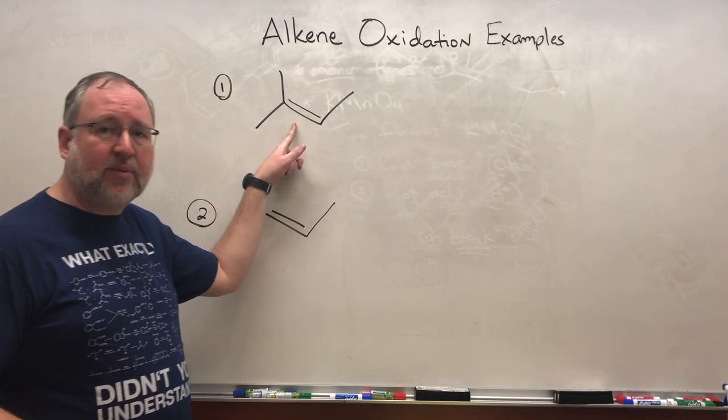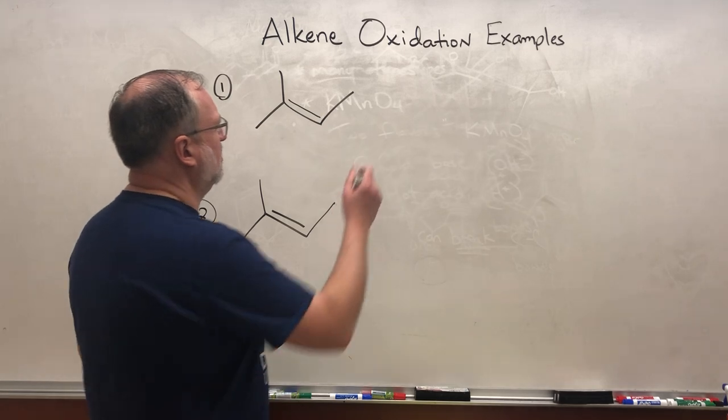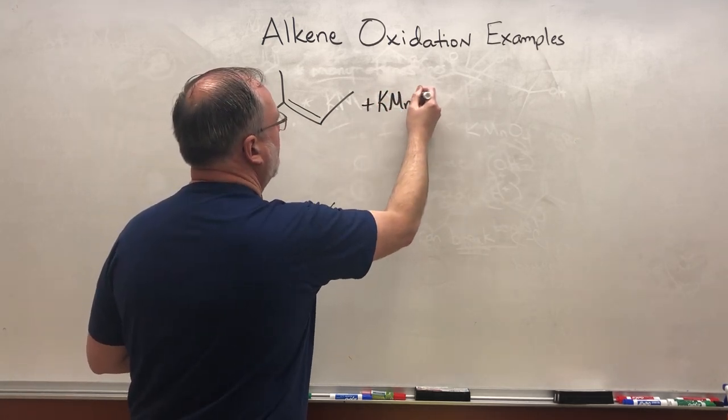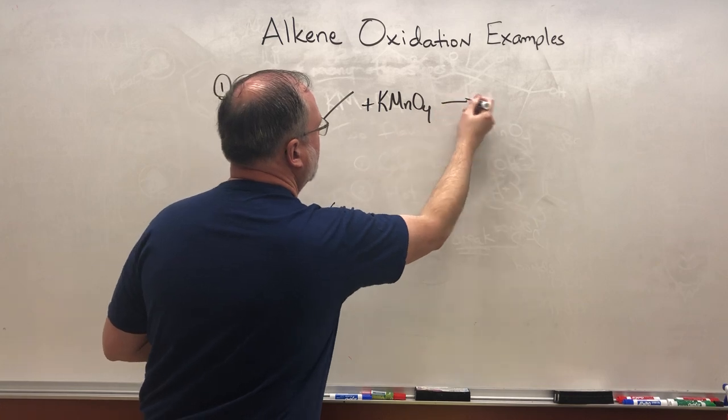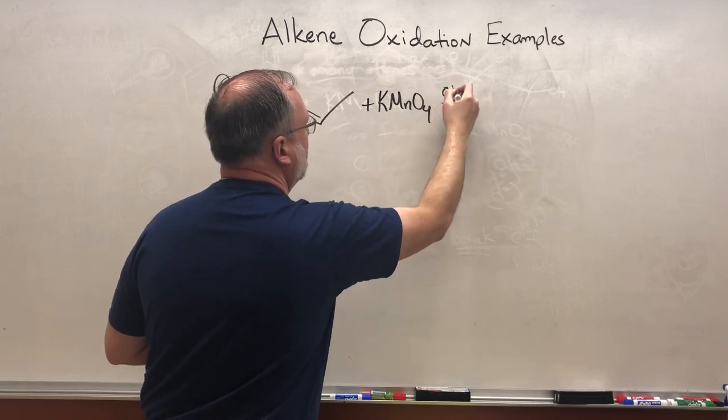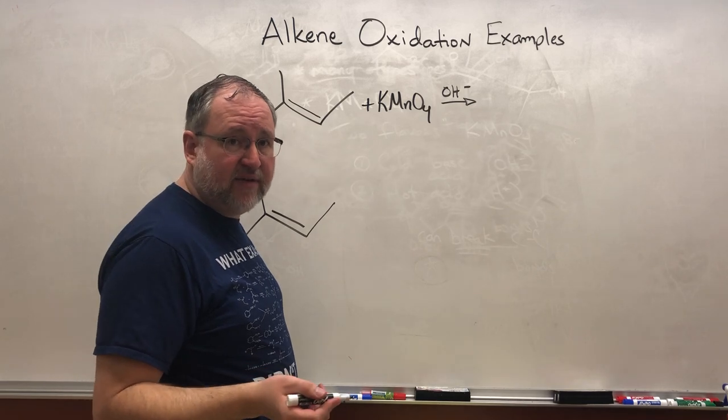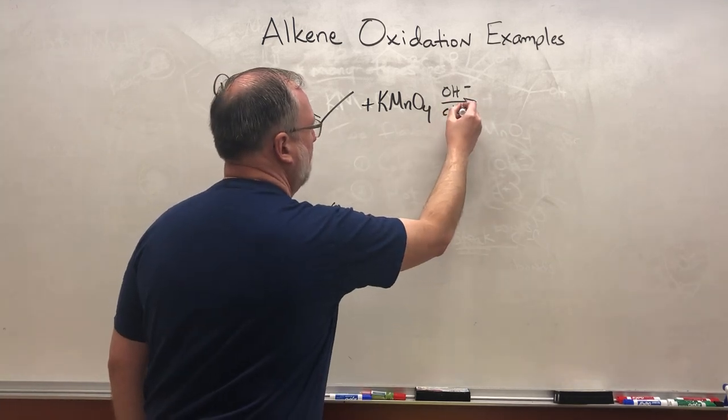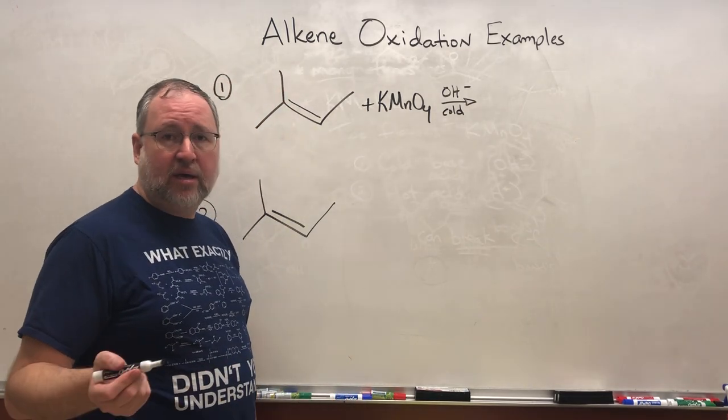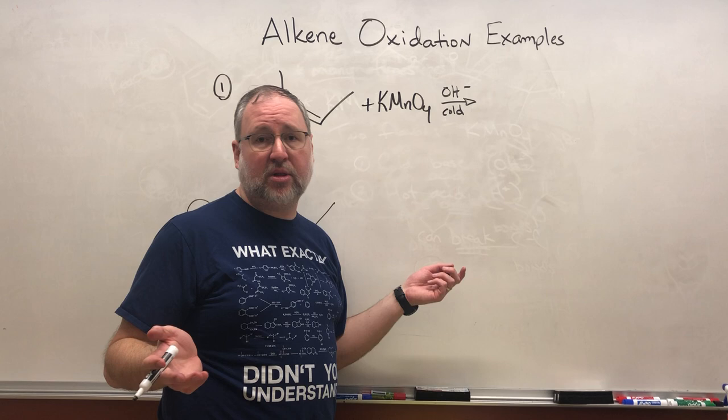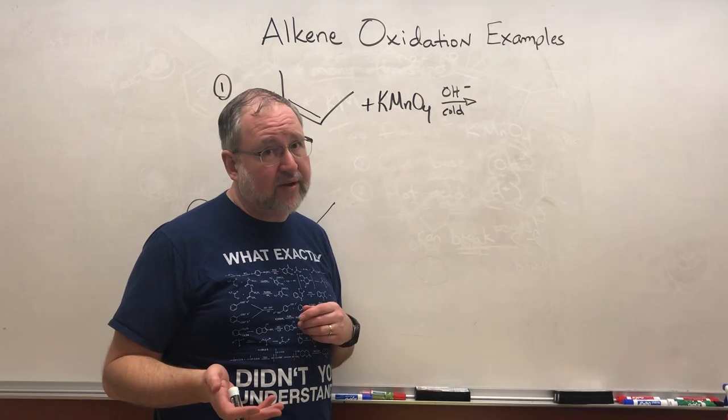Let's take the first example. Let's use some cold base. So with this one we're going to use potassium permanganate, KMnO4, and I'm going to use OH- to symbolize the fact that we're doing this one in base. I'm just going to write the word cold below the arrow. You might see potassium permanganate sometimes also goes above or below the arrow.